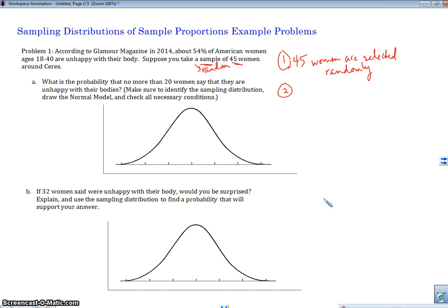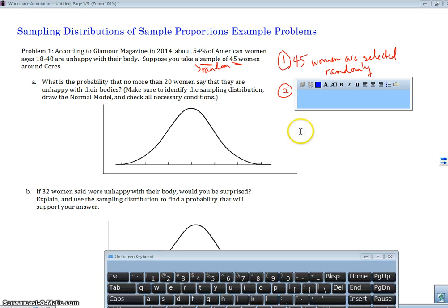What's the second condition? Well, the second condition is that it's less than 10%. And you can see here, 45 women, right? Our sample is 45. 45 women is less than 10% of all women,